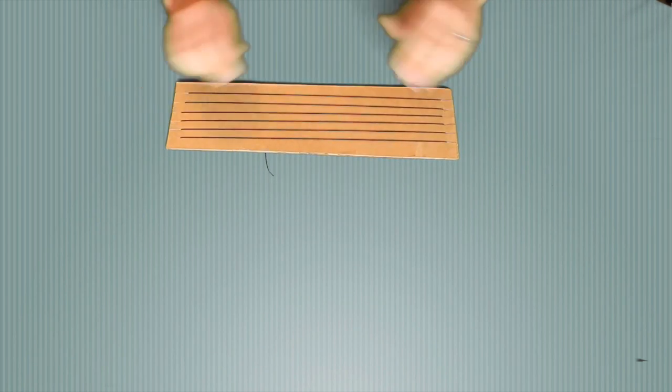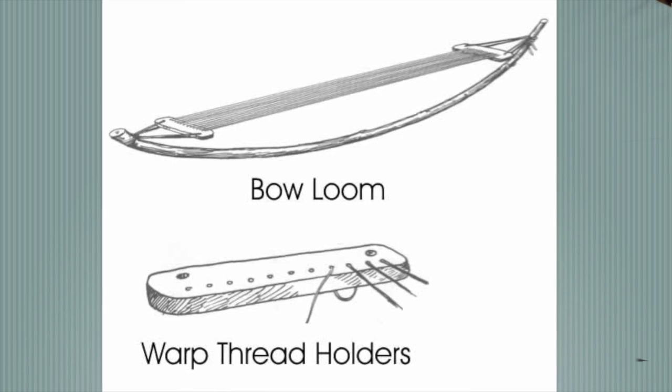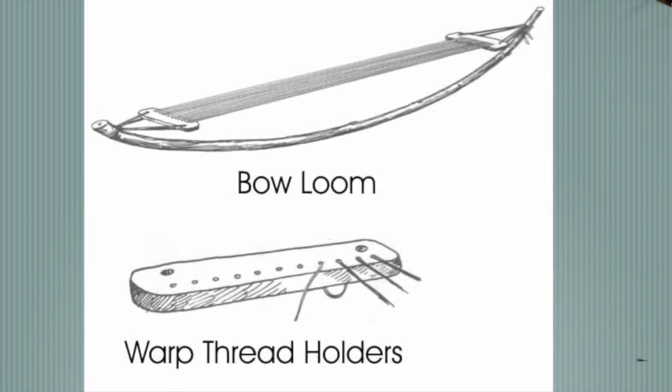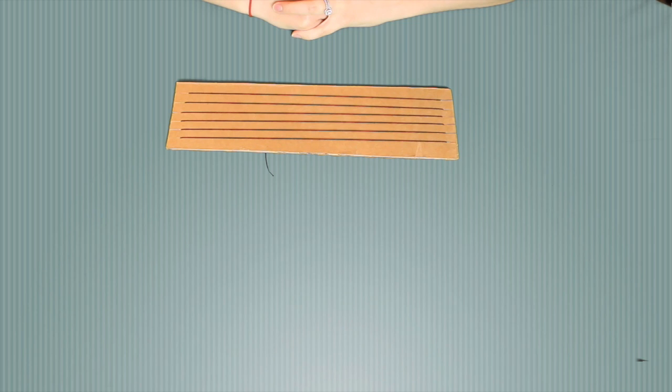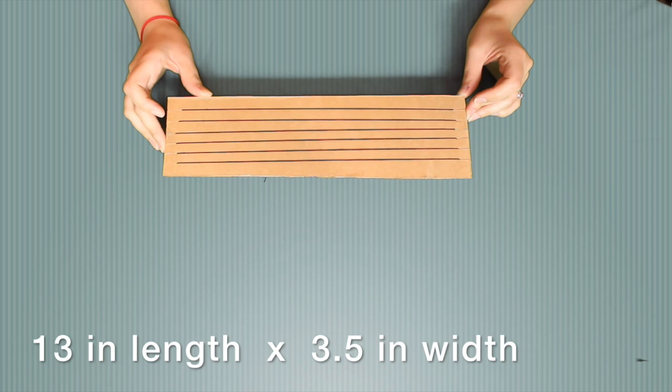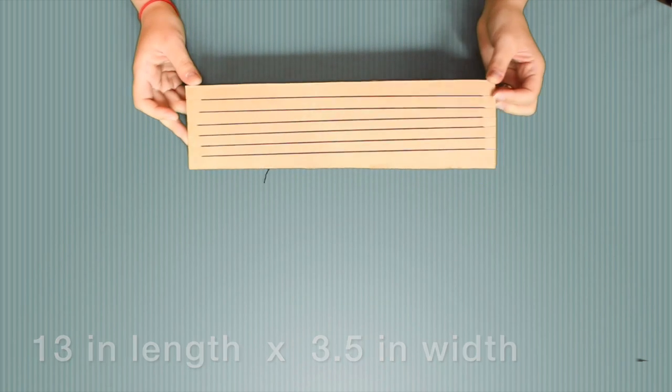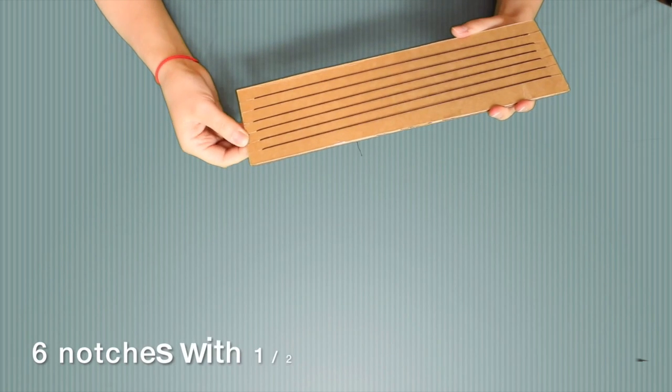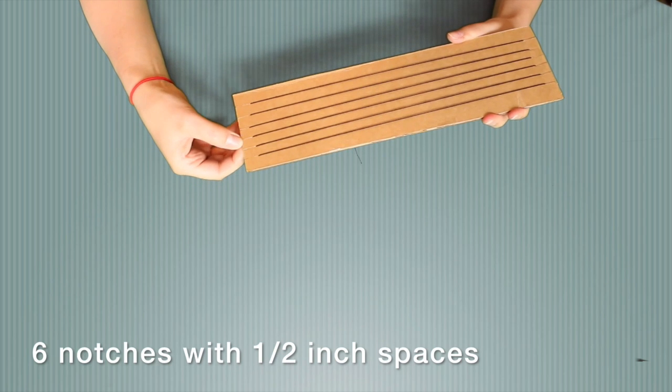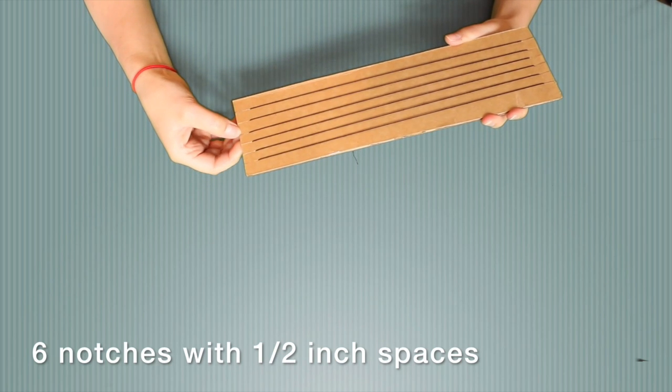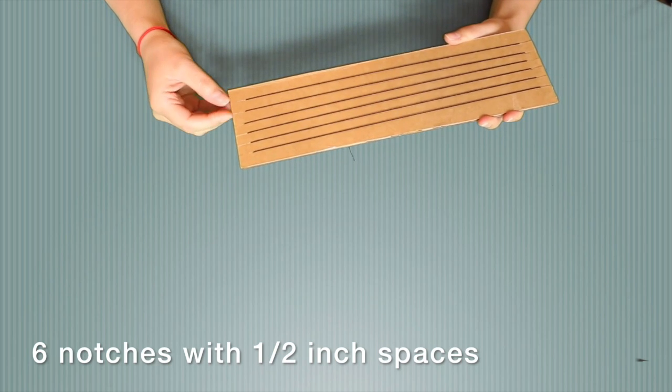The Iroquois used a bow loom which was made out of a stick and then it was bent and threaded. For a wampum belt project the looms are about 13 inches long by three and a half inches wide. At each end of the loom there are six notches you can see cut with about half inch spaces.